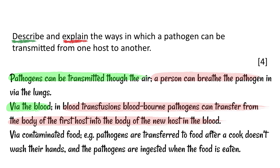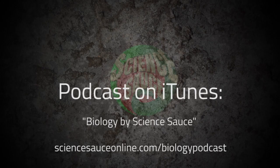In blood transfusions, blood-borne pathogens can transfer from the body of the first host into the body of the new host in the blood (explanation). Next: it can be transmitted via contaminated food (description); pathogens are transferred to food after a cook doesn't wash their hands, and the pathogens are ingested when the food is eaten (explanation). Assuming there's a mark available for each describe and each explain, that gives six potential marking points.